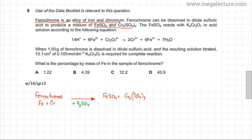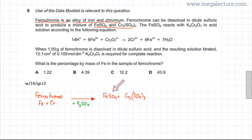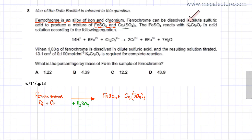As shown here, ferrochrome — iron plus chromium — is dissolved in sulfuric acid and produces FeSO₄ and Cr₂(SO₄)₃ in aqueous state. The question further reads that the FeSO₄ reacts with potassium dichromate(VI), K₂Cr₂O₇, in acid solution according to the following equation.